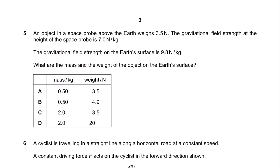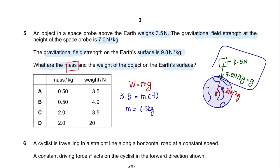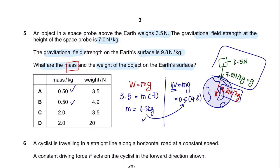Question 5. An object in a space probe above the Earth weighs 3.5 N. The gravitational field strength at the height of the space probe is 7 N per kilogram, and on Earth's surface it is 9.8 N per kilogram. What are the mass and the weight of the object on Earth's surface? The mass remains constant: using weight = mass × g, so mass = 3.5 ÷ 7 = 0.5 kg. Then weight on Earth = 0.5 × 9.8 = 4.9 N. So the answer is B.